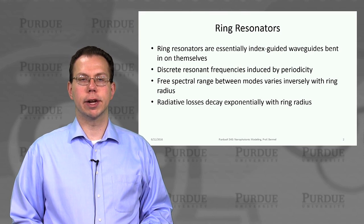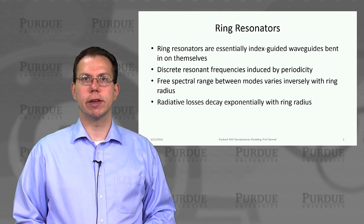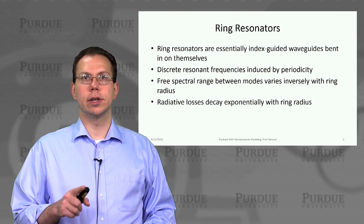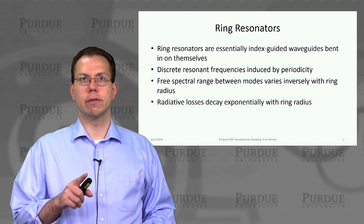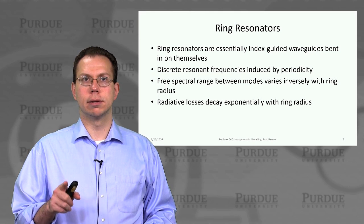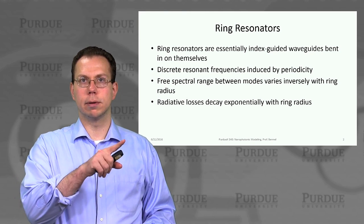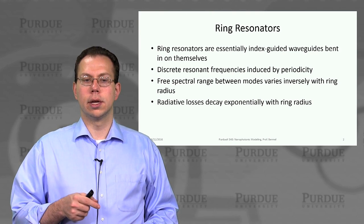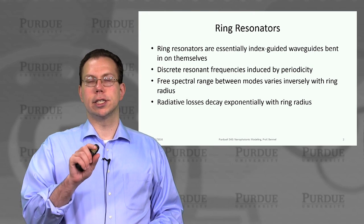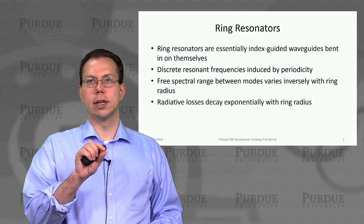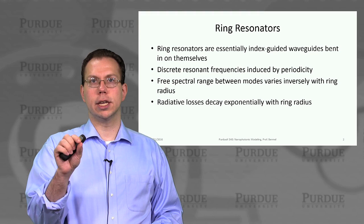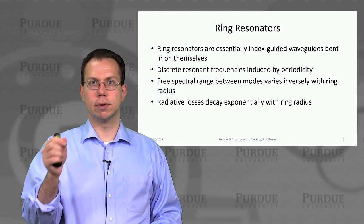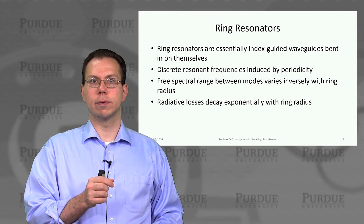You can think of a ring resonator kind of like the index guided waveguides that we had before, and remember we added a bend. So you can think about it like you're adding a very soft bend multiple times, until basically a straight waveguide gets bent into a circle. And what's interesting about that is, in addition to being able to guide potentially a broad range of frequencies, there are certain boundary conditions associated with the circular nature of the waveguide.